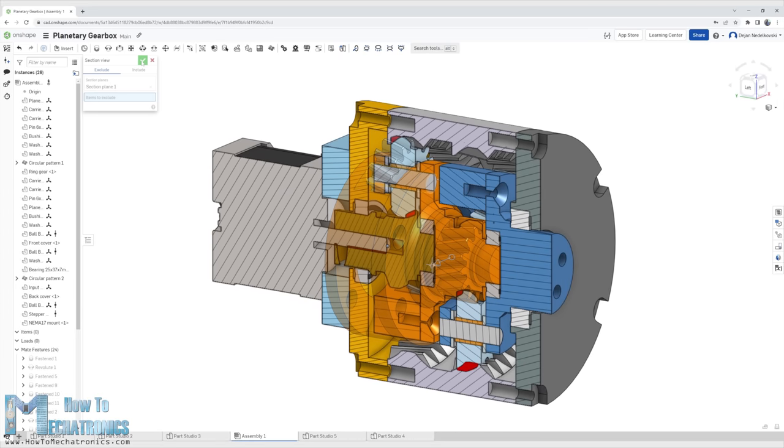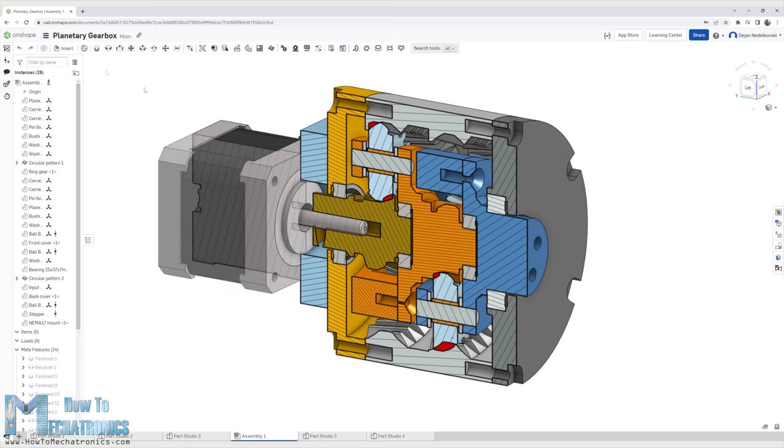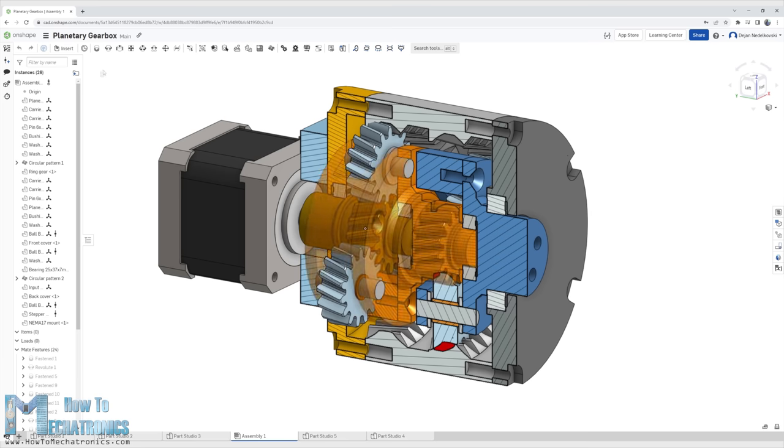Alright, so here's a recap of the design and the working principle of the planetary gearbox. The motor drives the input shaft, which is the sun gear of the first stage. That drives the planet gears and the planet carrier outputs 4 times slower rotation.